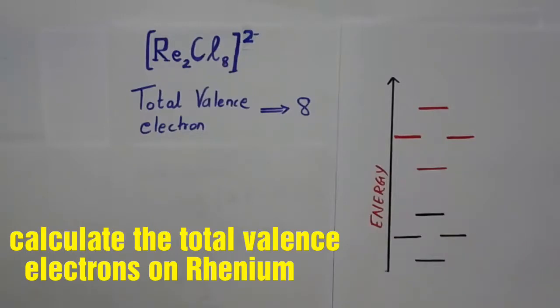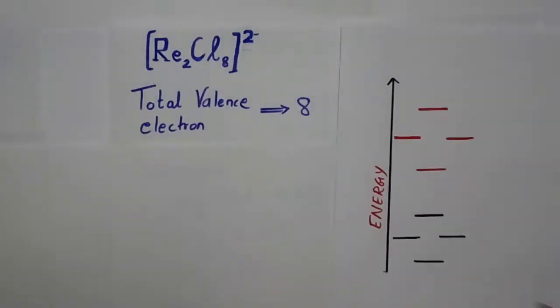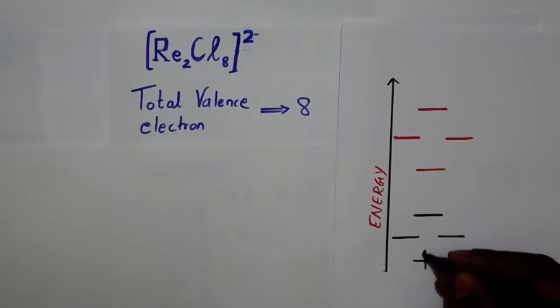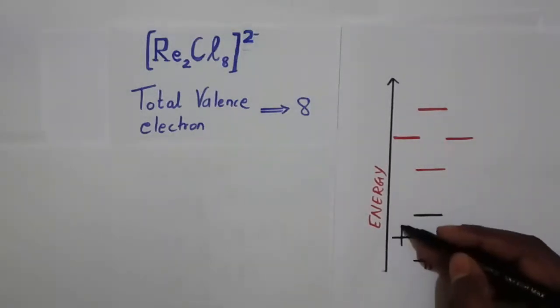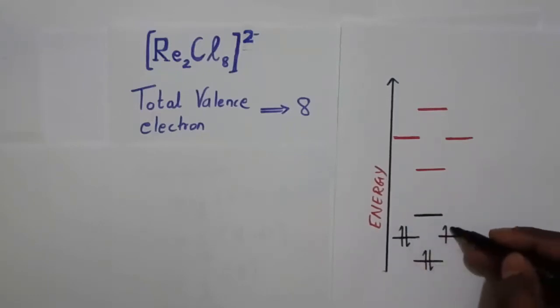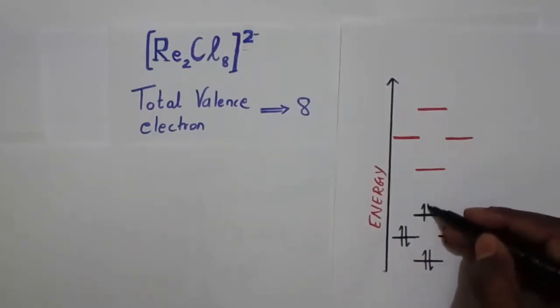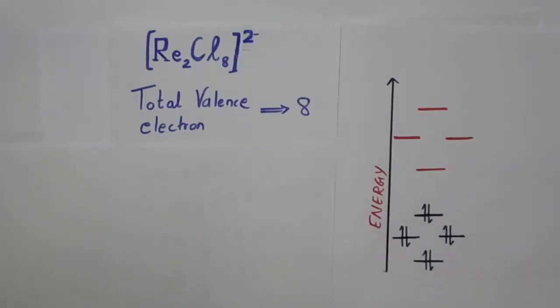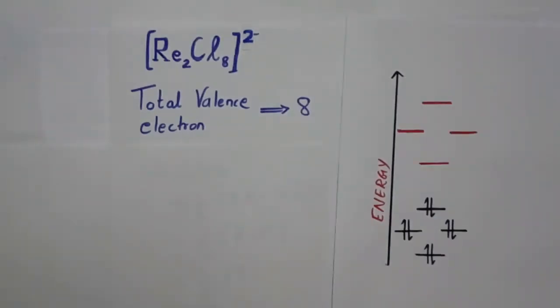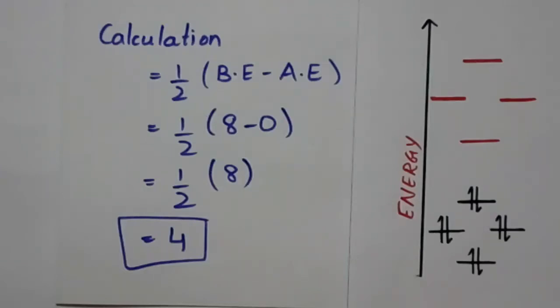In the following uranium complex, the total valence electrons is 8. So we have 8 bonding electrons and 0 anti-bonding electrons. With the help of the formula, the bond order we get is 3.